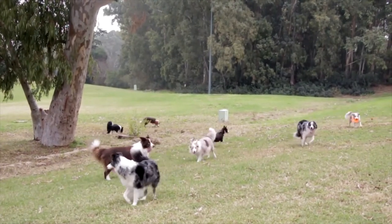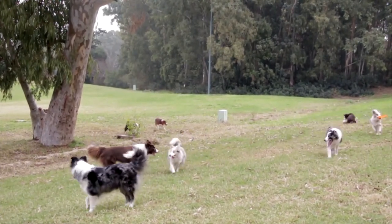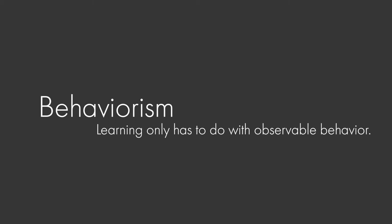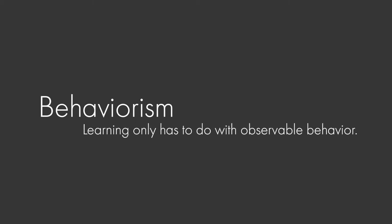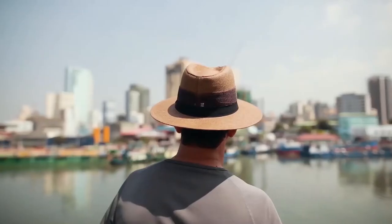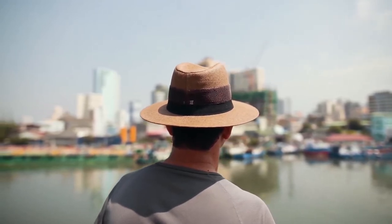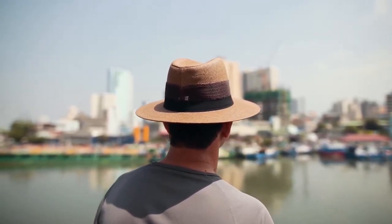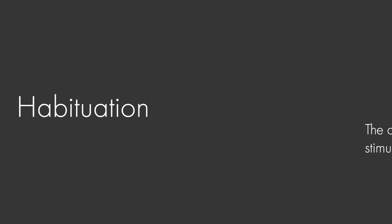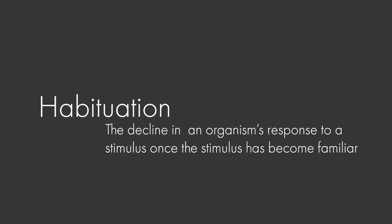An ambitious goal to be sure. This early work on learning contributed to the foundations of behaviorism, a school of thought that viewed learning as having only to do with purely observable behaviors and nothing whatsoever to do with any unobservable or internal mental processes. Perhaps the simplest form of learning to have been demonstrated across species and intensively studied by behaviorists is habituation — the decline in an organism's response to a stimulus once the stimulus has become familiar.